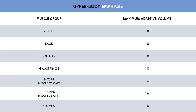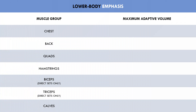For this second example, let's say the same trainee wants to emphasize the lower body over the upper body. The trainee has allocated more volume to the quads, hamstrings, and calves over the chest, back, and arms. The quads, hamstrings, and calves all use 18 sets per week, while the chest, back, biceps, and triceps are only trained with 12 sets each. This will mean the lower body grows at a faster rate, while the upper body will still grow but at a slower rate.